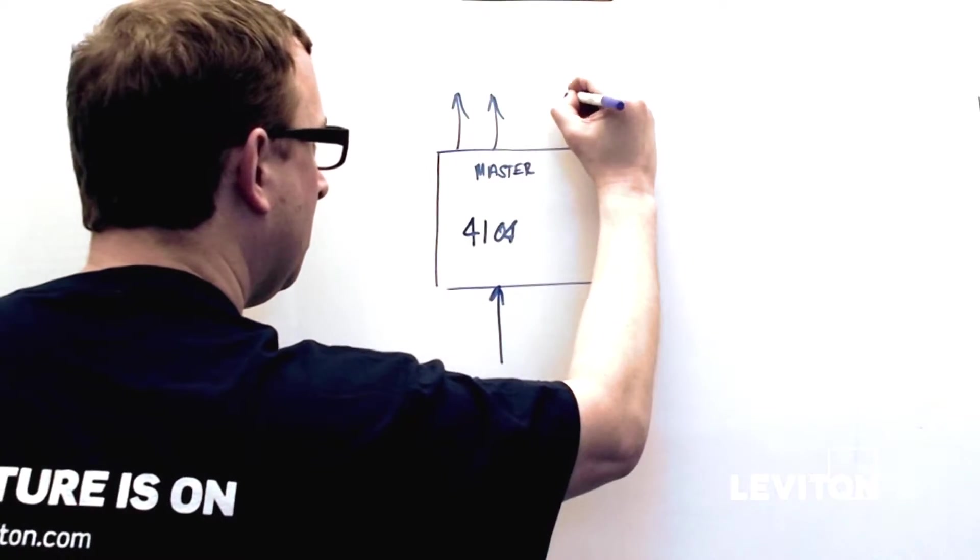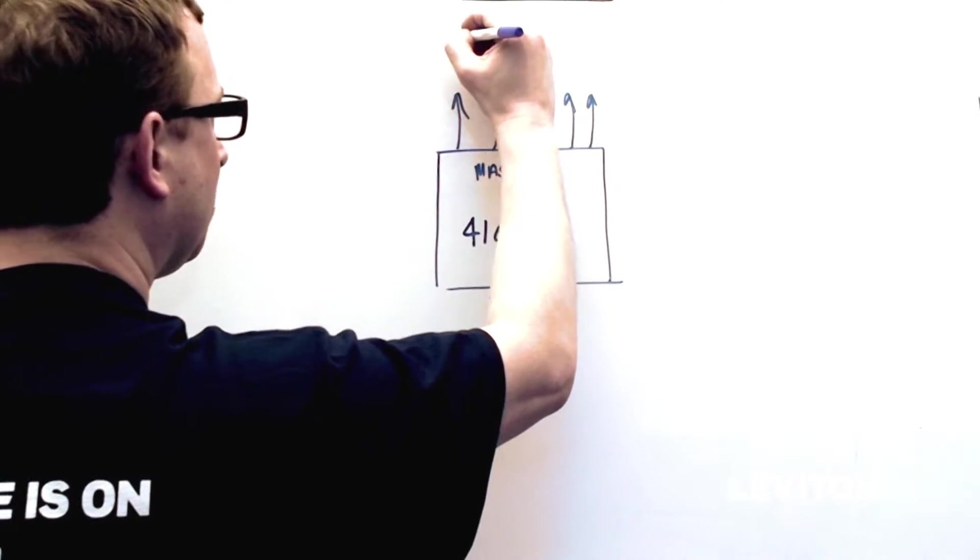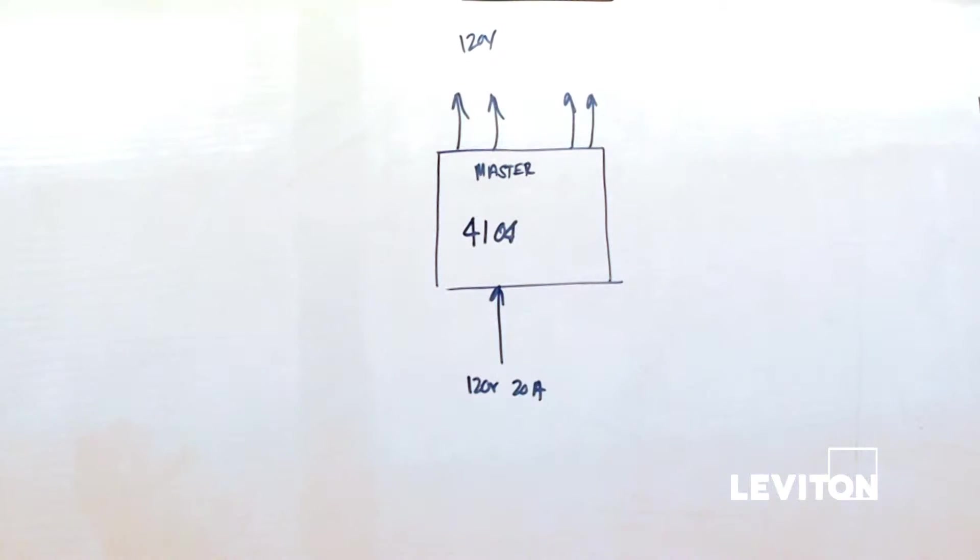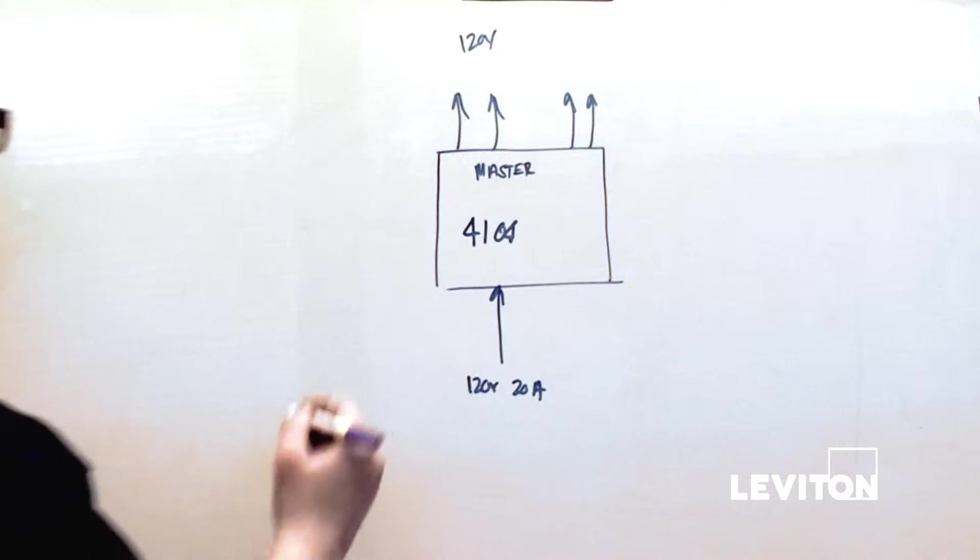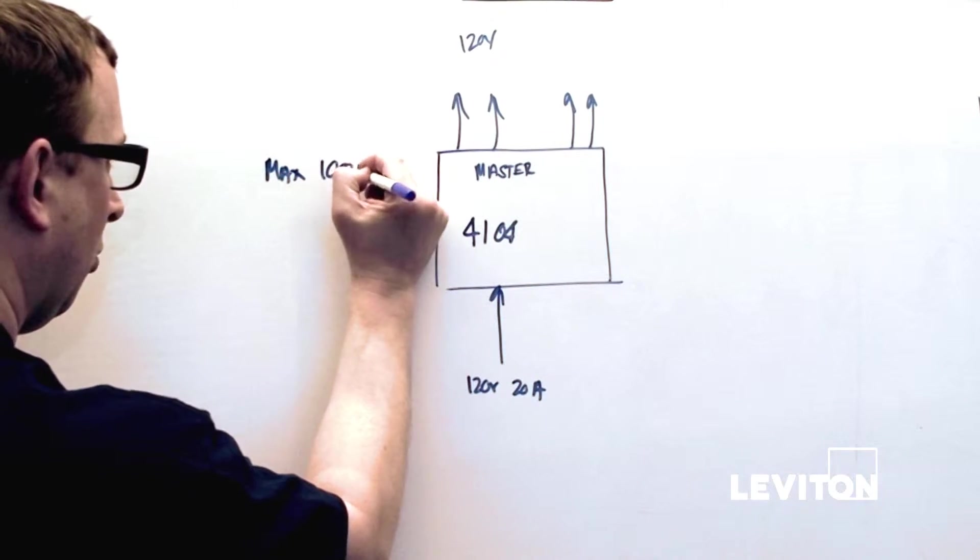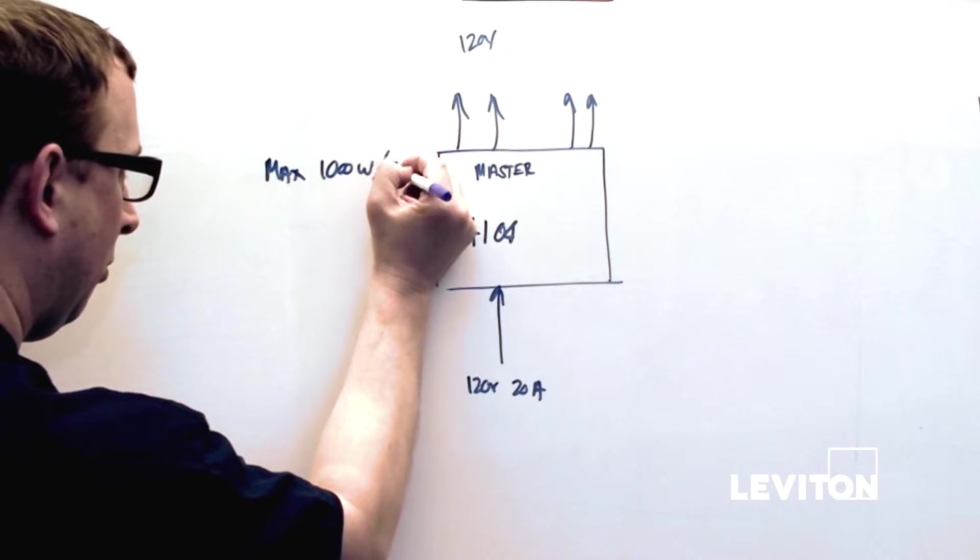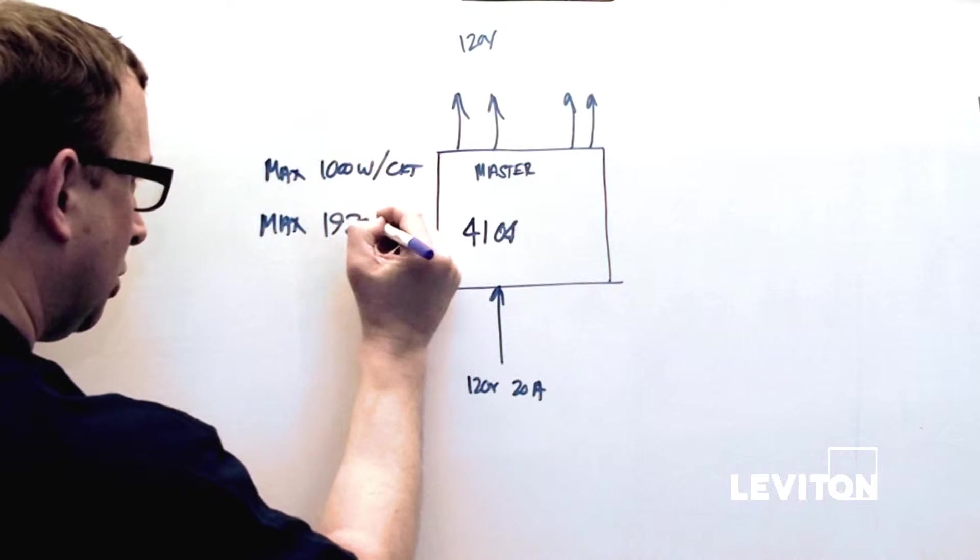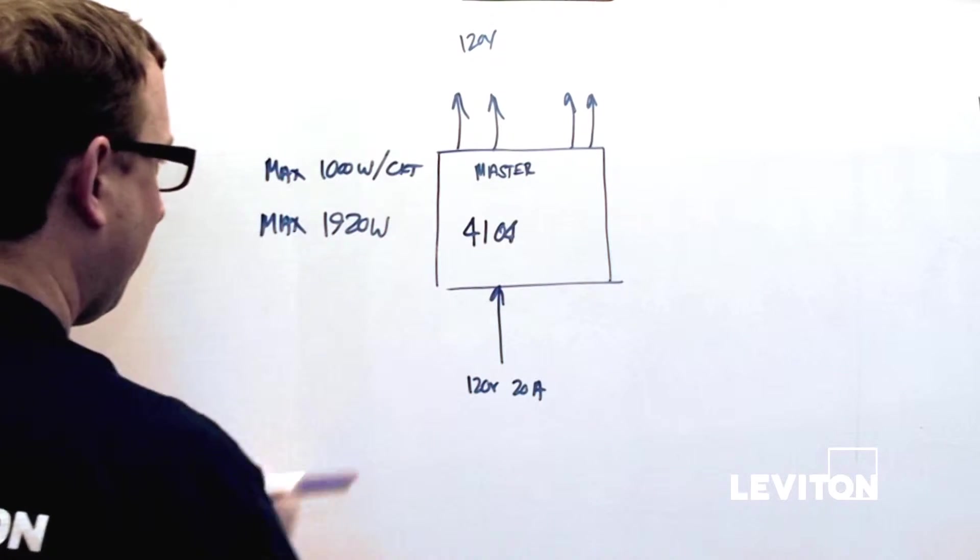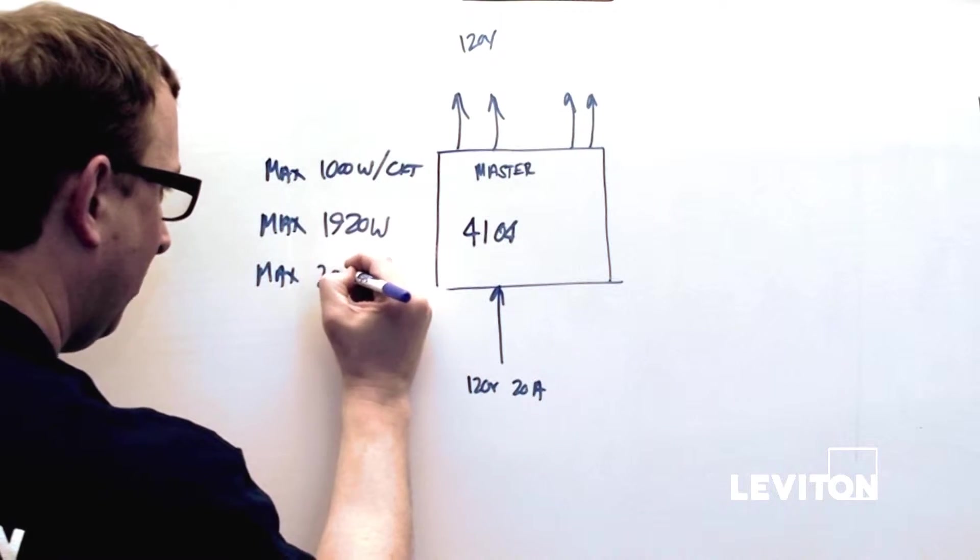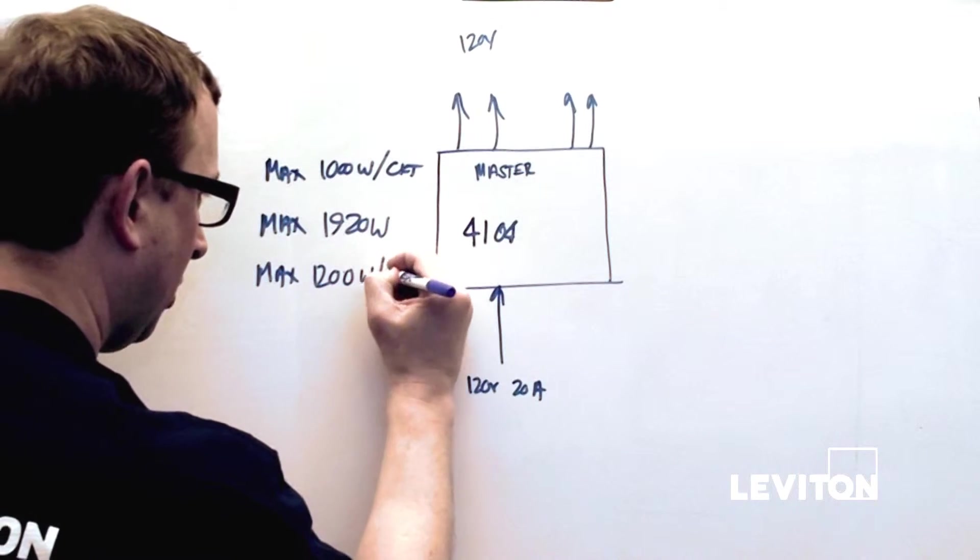Coming out of it, it would have four individual 120 volt circuits. If you think about the ratings on these circuits, they are all rated for a max 1000 watts per output circuit or per dimmer, max 1920 watts continuous for the entire device, and max 1200 watts per side.